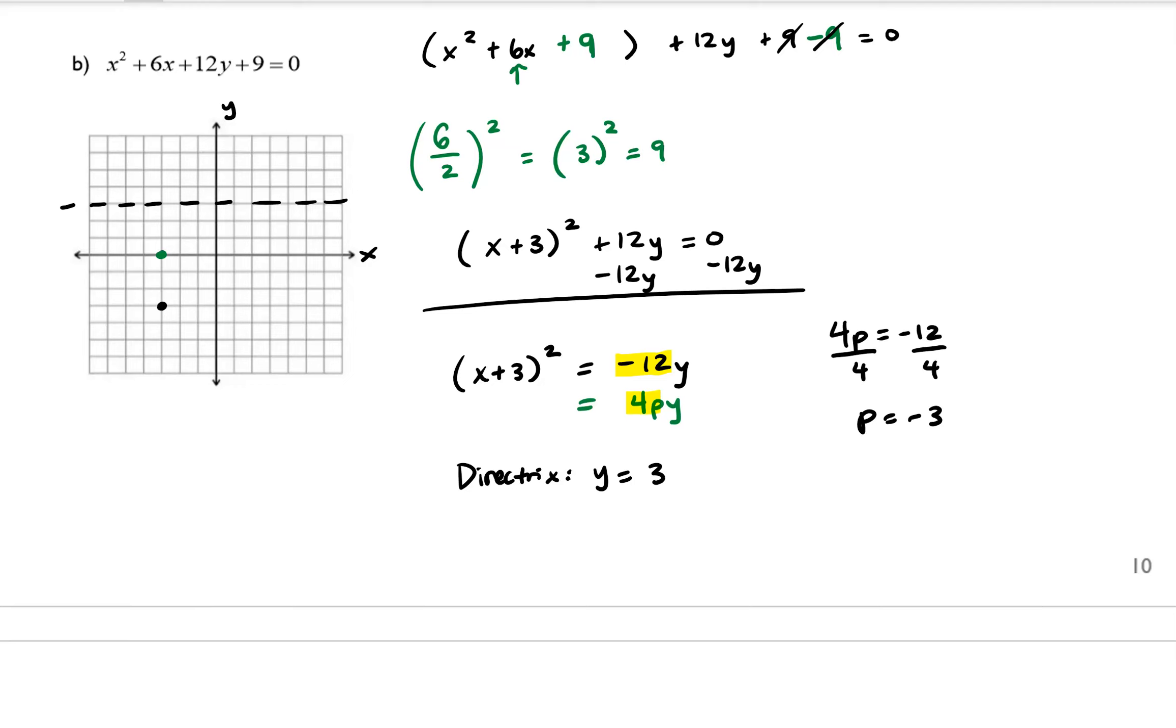The other thing that's going to help us graph this is the focal diameter, which is equal to the absolute value of 4 times p. And we know that the absolute value of -12 is positive 12. So we are going to need to go 6 units to the right and 6 units to the left from the focus.